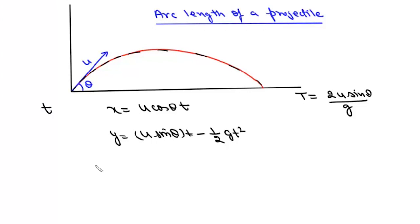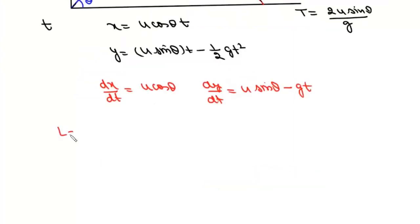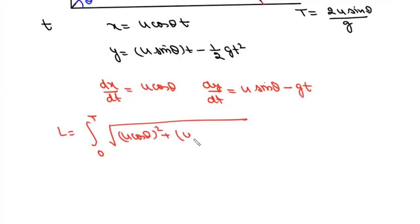Now we find dx/dt and dy/dt. dx/dt is u cos θ, and dy/dt is u sin θ − gt. We can write the arc length of this projectile as the integral from 0 to the time of flight of √[(u cos θ)² + (u sin θ − gt)²] dt.